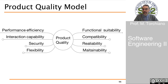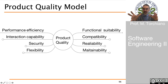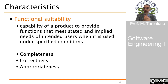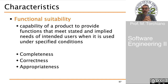Focusing on the product quality model, we have eight different characteristics: functional suitability, compatibility, reliability, maintainability, performance efficiency, interaction capability, security, and flexibility. These are very high-level constructs, typically further specialized into sub-characteristics. Functional suitability is the capability of a product to provide functions that meet stated and implied needs of intended users when used under specified conditions.